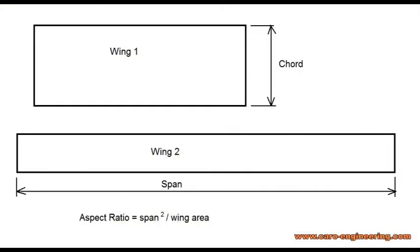Once we have decided on what wing area the airplane needs, the next question to address is the wingspan. Here, considerations about performance and structures are about to start. You will see that designing an airplane requires some knowledge in a number of different areas. If you keep the wingspan the same while you change the wing area, you are also changing the aspect ratio.